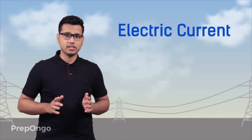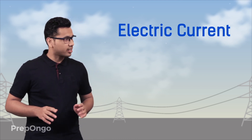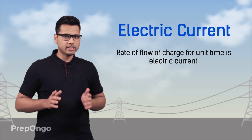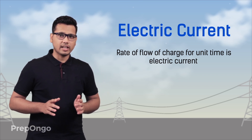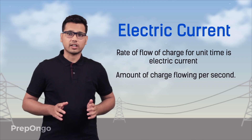Hello everyone. In our previous videos we had learned about the electric charge and we had also seen about the flow of charges. Now we are ready to understand what is an electric current. Electric current is defined as the rate of flow of charge per unit time. You can also understand this as the amount of charge flowing per second through a conductor.